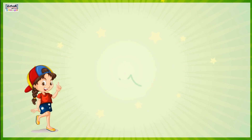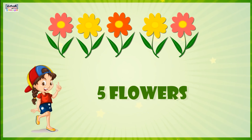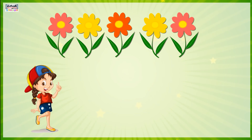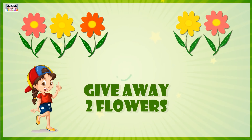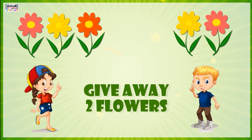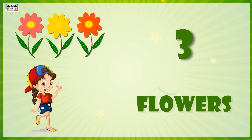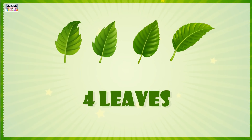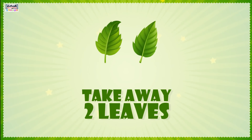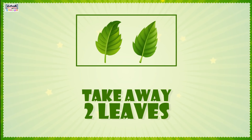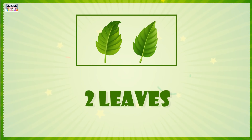Meena has 5 flowers. If she gives away 2, how many flowers will be left? Answer: 3 flowers. Out of 4 leaves, if we take away 2, then 2 leaves are left.